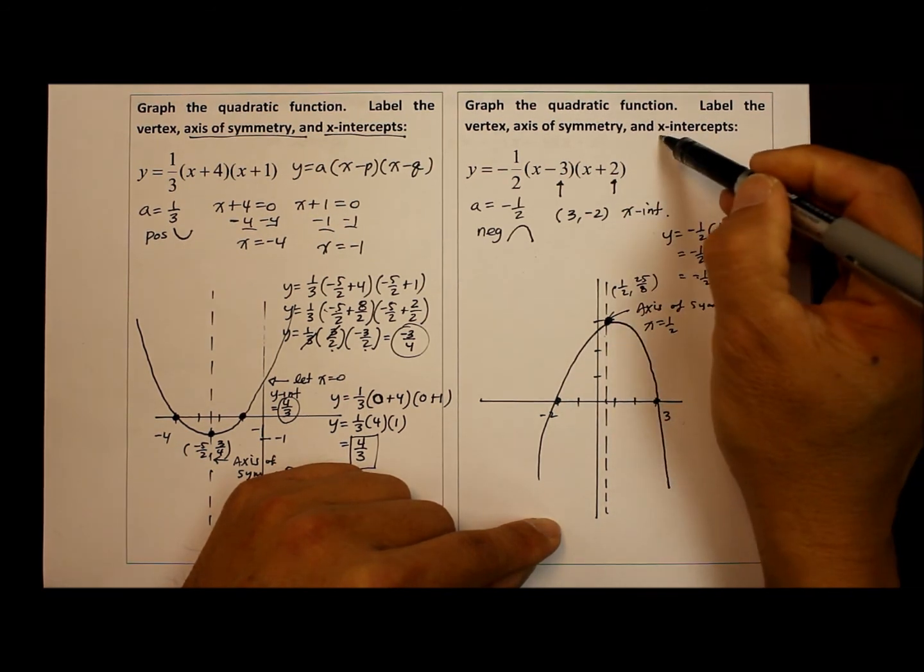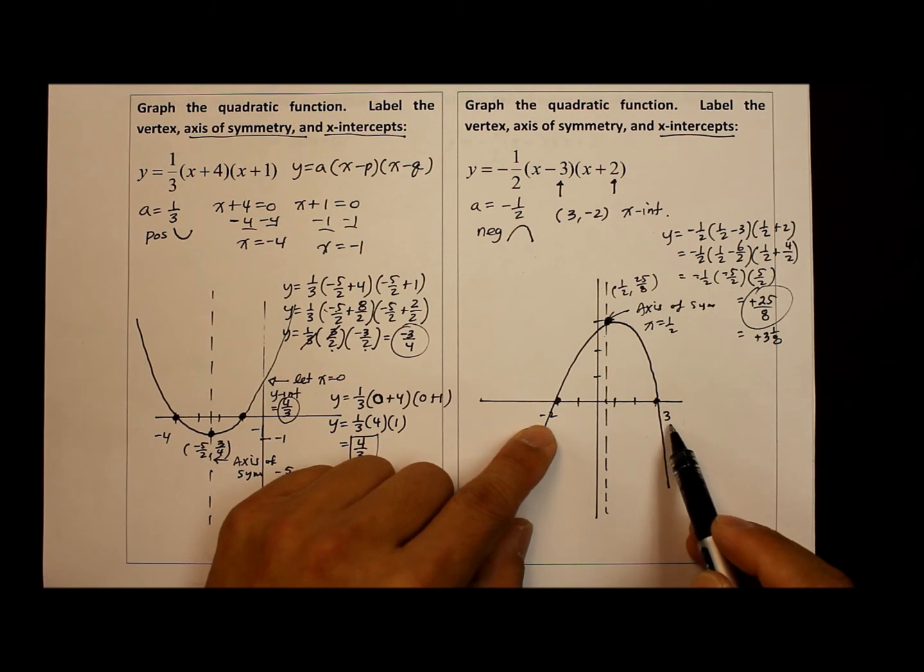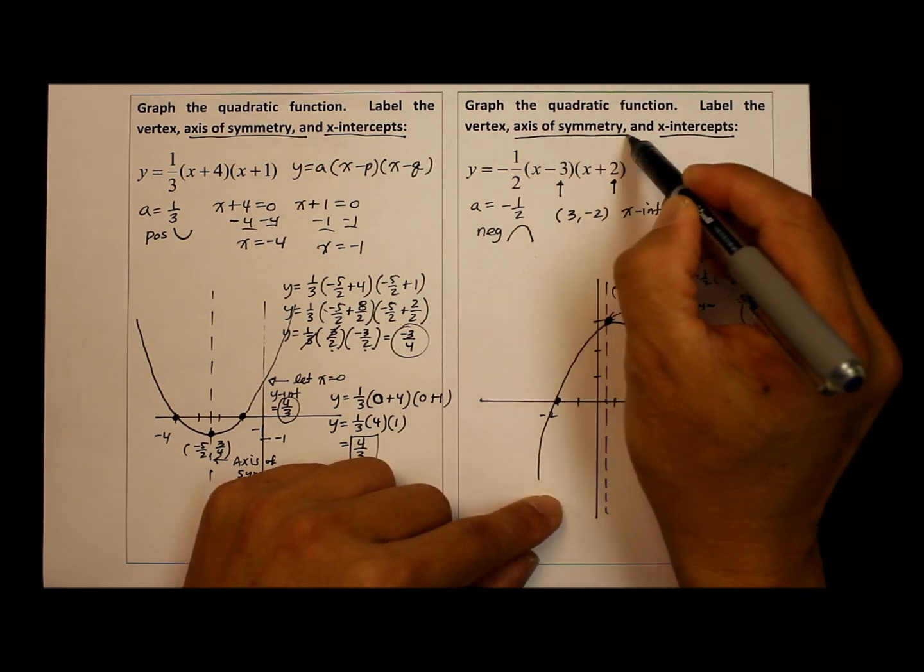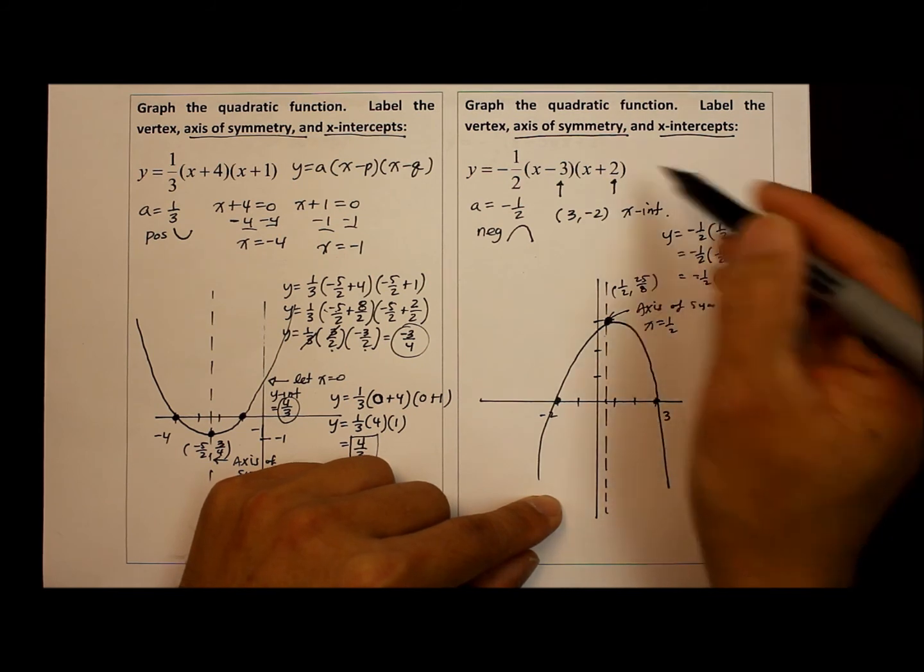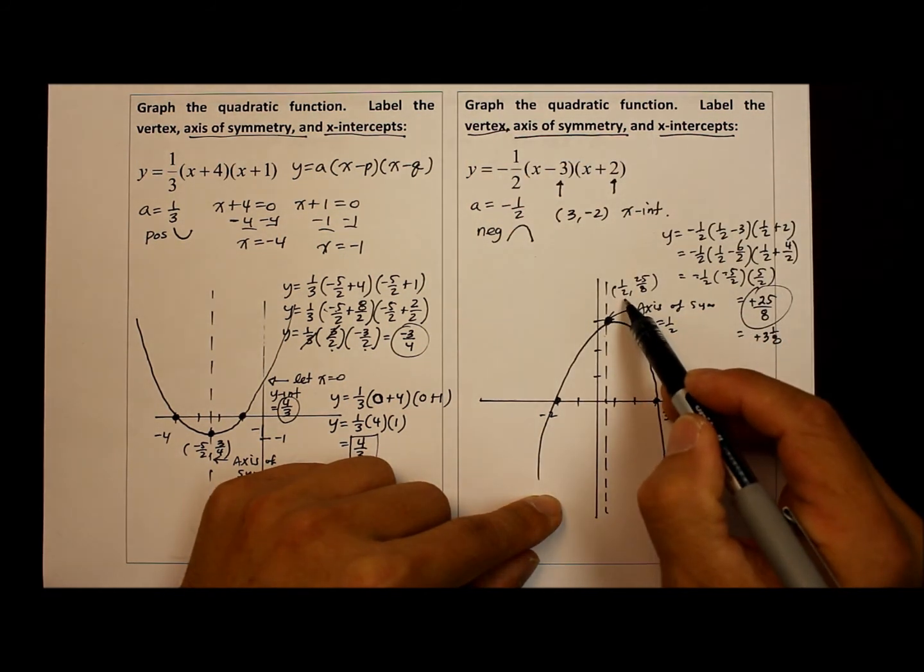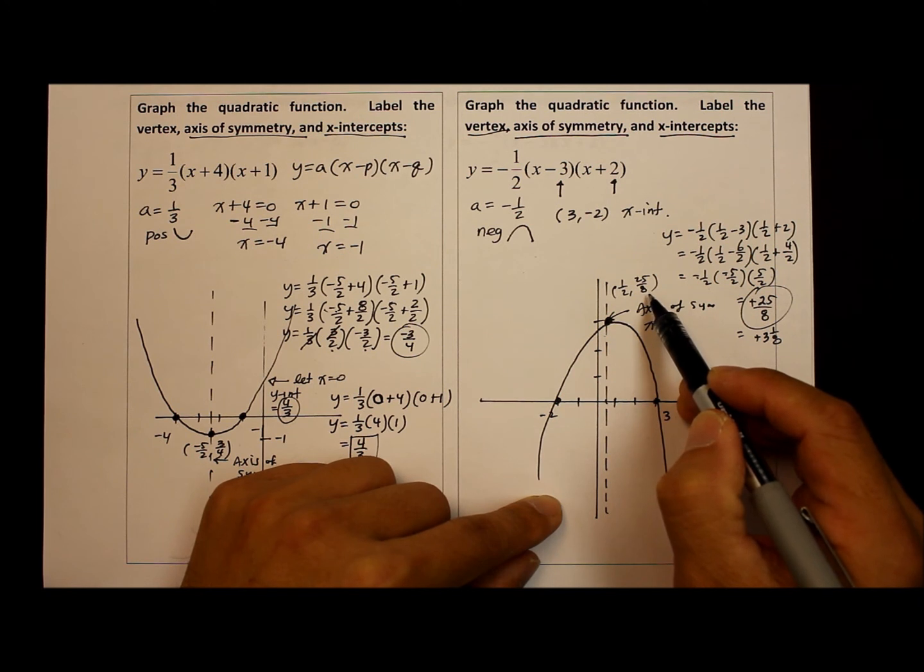So I could go ahead and draw the parabola. And that satisfies the x-intercepts at negative two and three, axes of symmetry, which is one-half, and the vertex coordinate, which is one-half and twenty-five over eight.